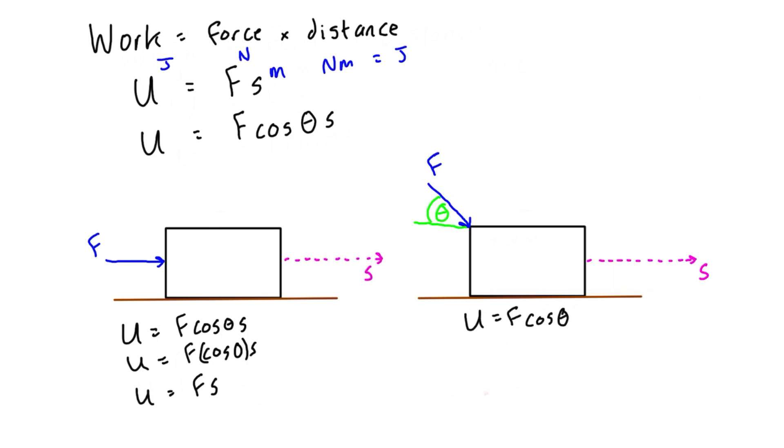That gives us the work done by the force on the object as it moves the distance S. Let's apply some numbers: F in both cases is 10 newtons, S equals 5 meters, and let's call theta 40 degrees.